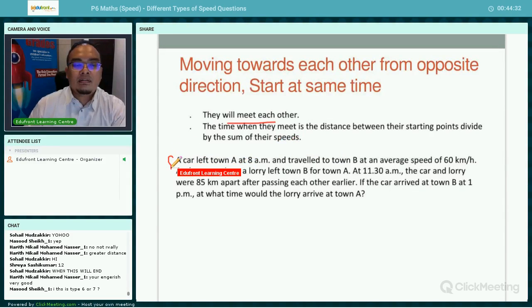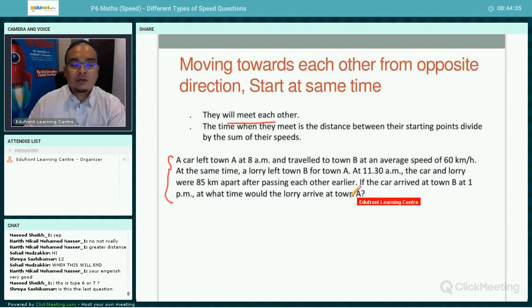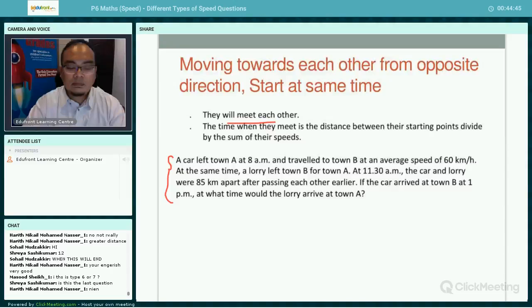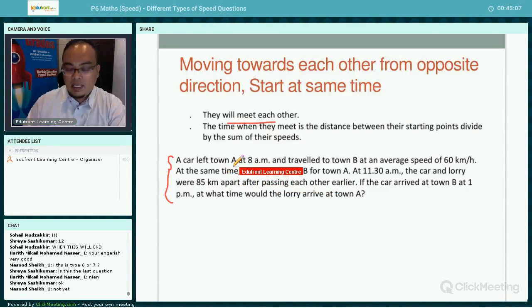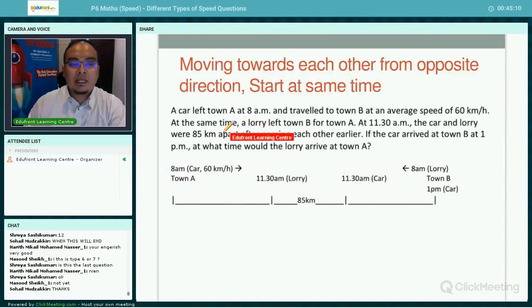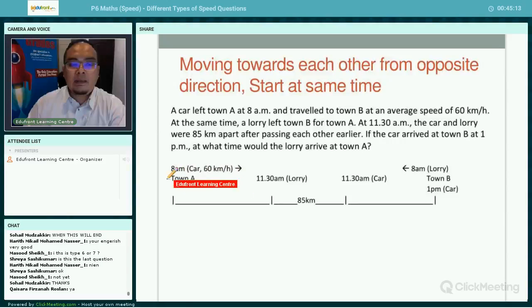Let's take a look at the question here. I'll give you about one minute. Can you read this question on your own quietly? A car left town A at 8 a.m. Let's draw the timeline. Let's take a look at the timeline. So a car here left in this direction. You can see that it travels in the opposite direction.